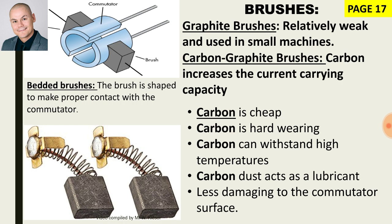We get different types of brushes — carbon brushes and graphite brushes. The term 'bedded' means that we shape a new brush to the surface of the commutator. We like carbon because it is cheap, hard-wearing, can withstand high temperature, and carbon dust acts as a lubricant.